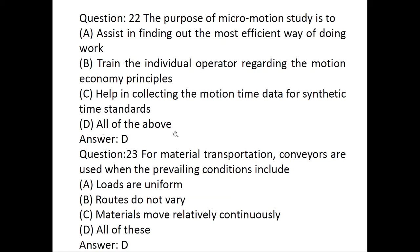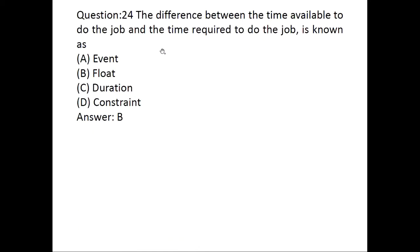For material transportation, conveyors are used when the prevailing conditions include: loads are uniform, routes do not vary, materials move relatively continuously. All of these three should be present. The answer is all of the above. The difference between the time available to do the job and time required to do the job is known as slack. This answer is slack.